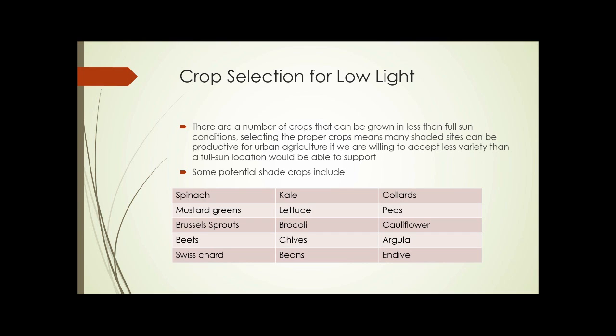This chart shows some crops that can be grown in lower light conditions. These include spinach, kale, collard greens, mustard greens, lettuce, peas, Brussels sprouts, broccoli, cauliflower, beets, chives, arugula, Swiss chard, beans, and endive. There are a lot of potential crops that we can grow in less than optimum conditions, so don't let the fact that we may not find ideal locations stop us from creating an urban agriculture project.